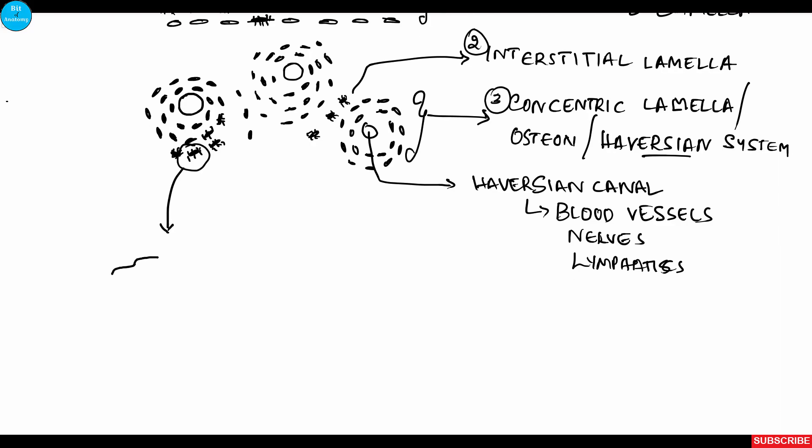If you see one lacunae, it is a large space with numerous extensions called canalicular process. The space contains the osteocytes whereas the canalicular process contains the cytoplasmic projections.